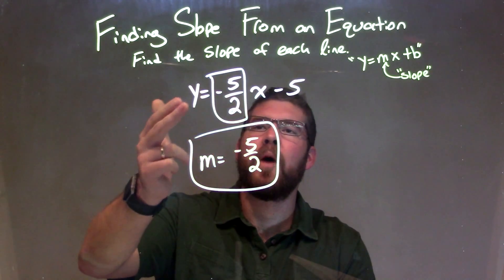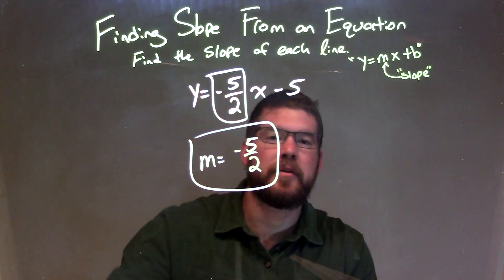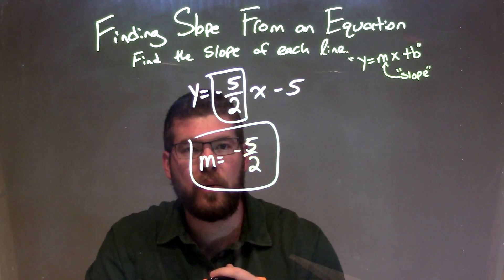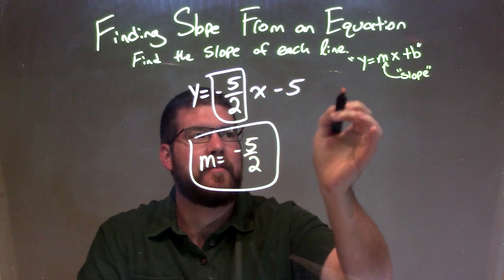So let's recap. We're given y equals negative 5 halves x minus 5, and we need to find the slope. We knew, or we saw that it was in slope-intercept form,